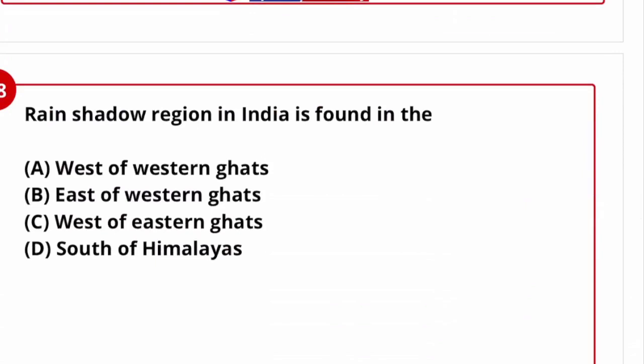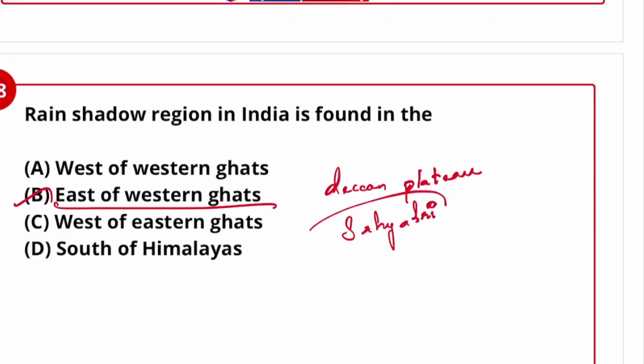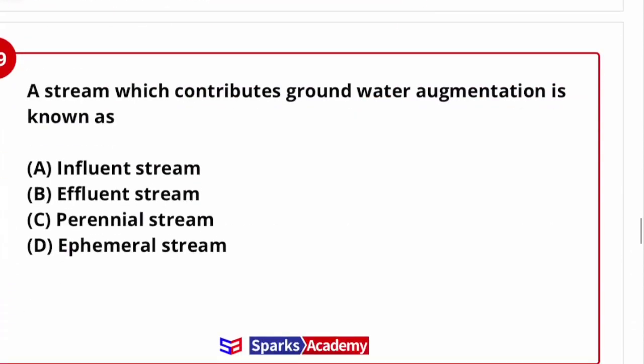Next question: the rain shadow region in India is found east of the Western Ghats. The Sahyadri Hills (Western Ghats) create a rain shadow on their eastern side. So the answer is east of the Western Ghats.